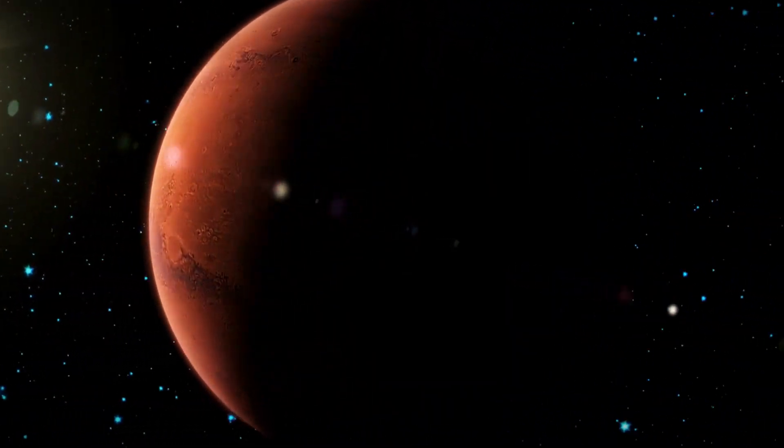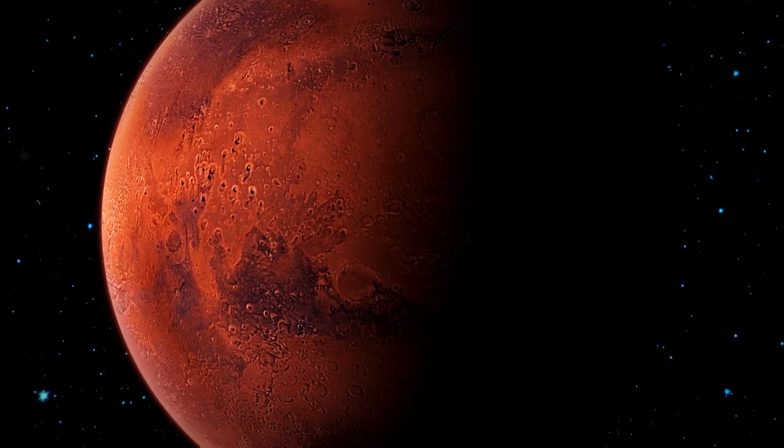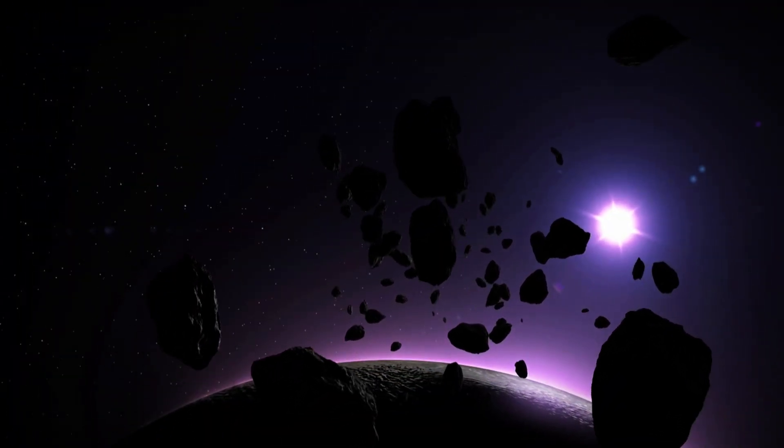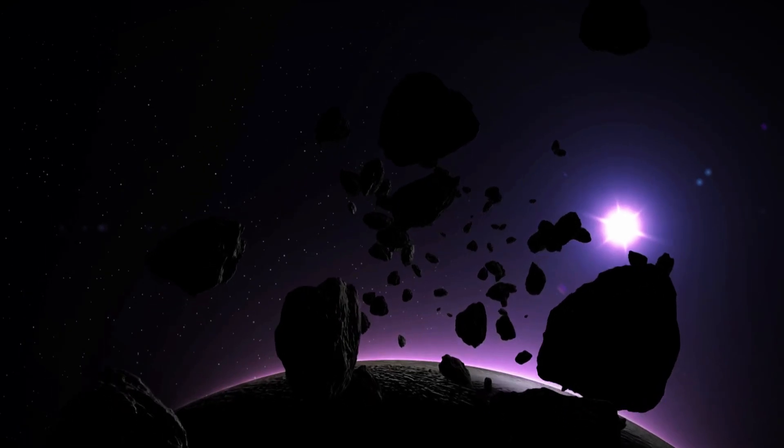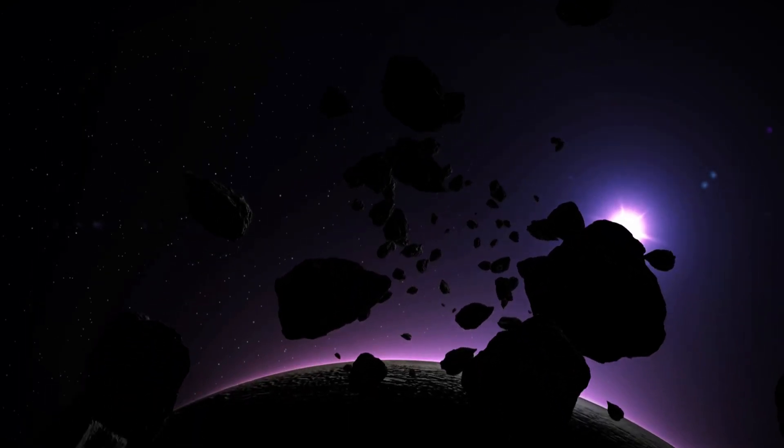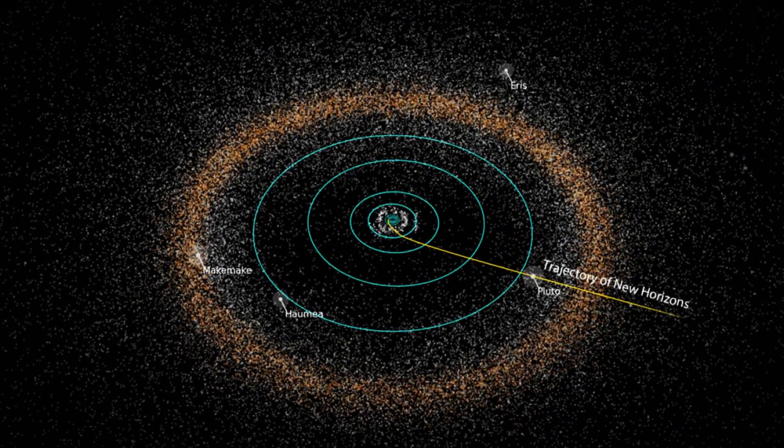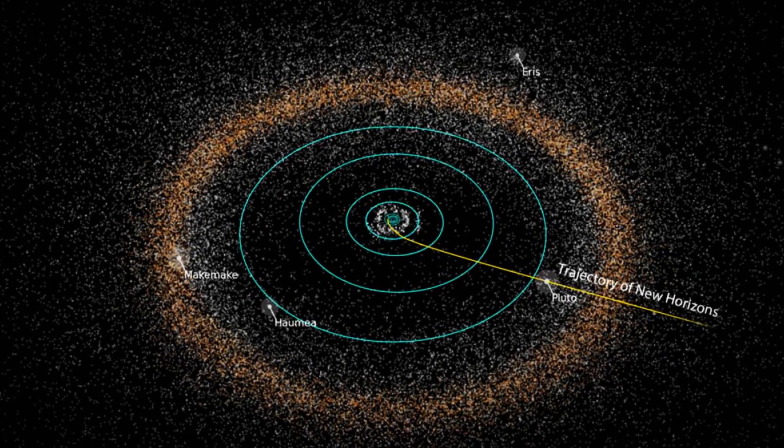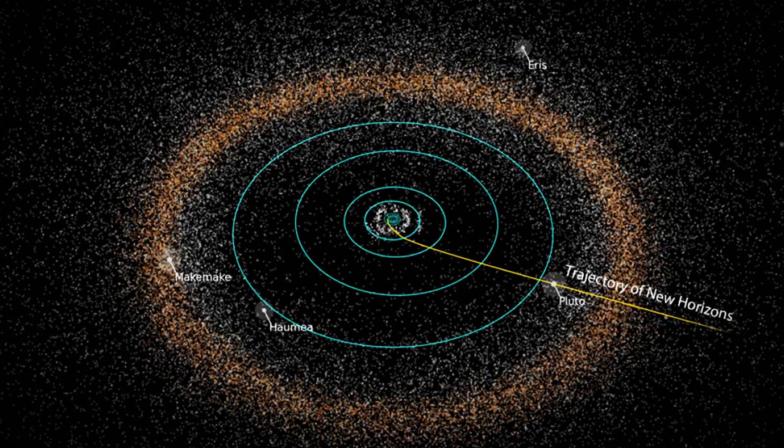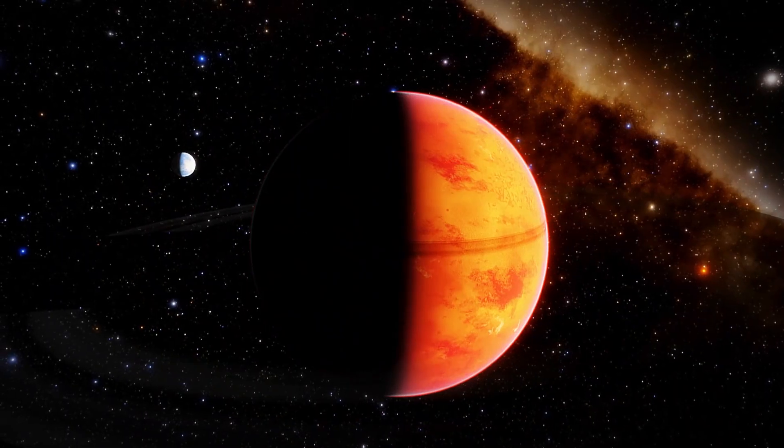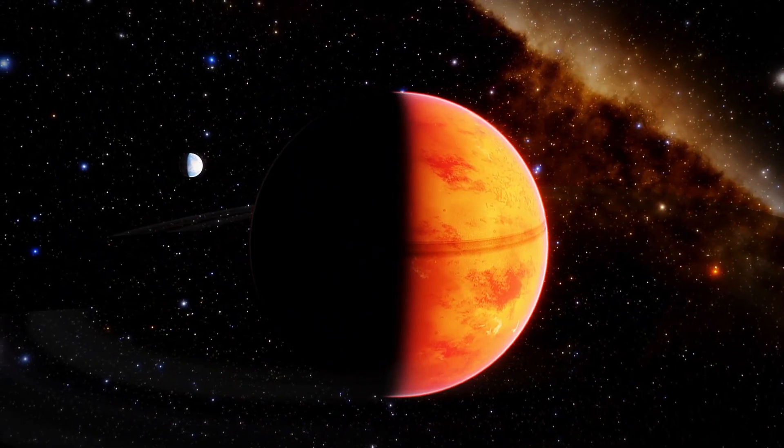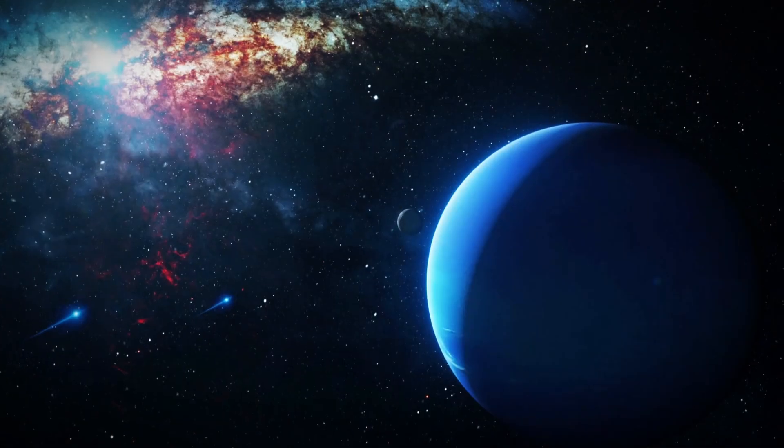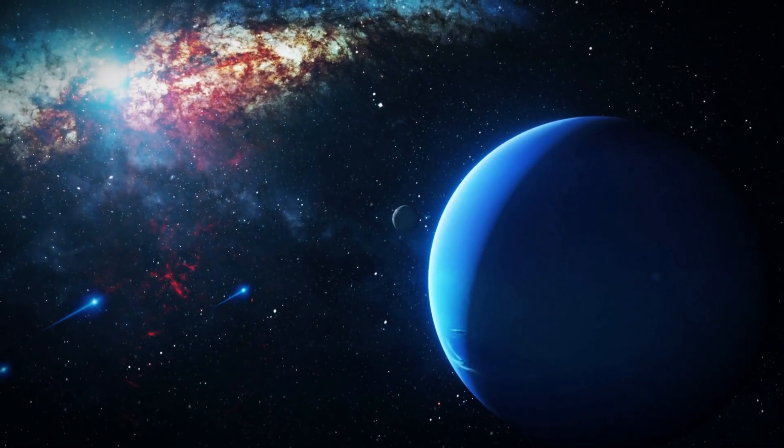At first, the mysterious Planet 9 was not considered the cause of the Kuiper Belt anomalies. Astronomers initially proposed that the gravitational influence of several massive objects, such as a cluster of dwarf planets, was to blame. However, this theory was quickly abandoned because it required the Kuiper Belt to be 100 times more massive than it actually is. After conducting several simulations, Brown and Batygin reached a remarkable conclusion.